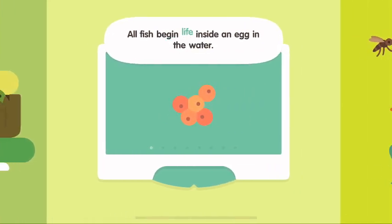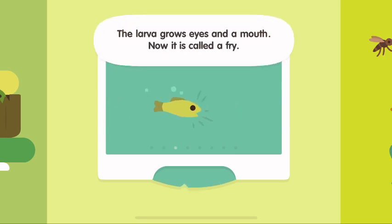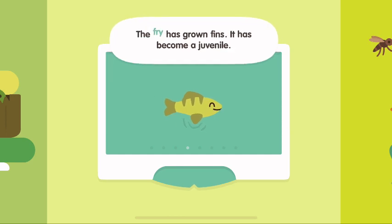All fish begin life inside an egg in the water. A tiny larva emerges. The larva has a yolk sac that contains food. The larva grows eyes and a mouth. Now it is called a fry. The fry has grown fins.